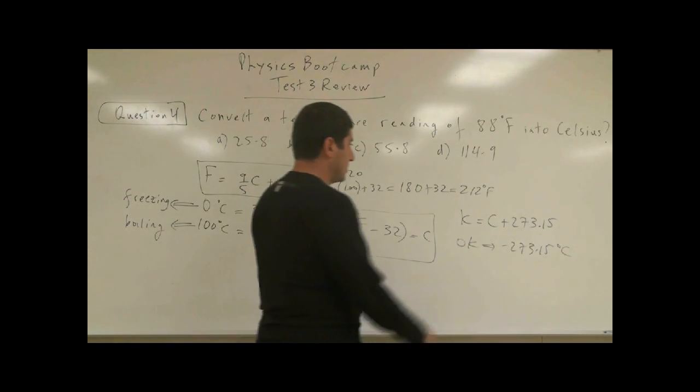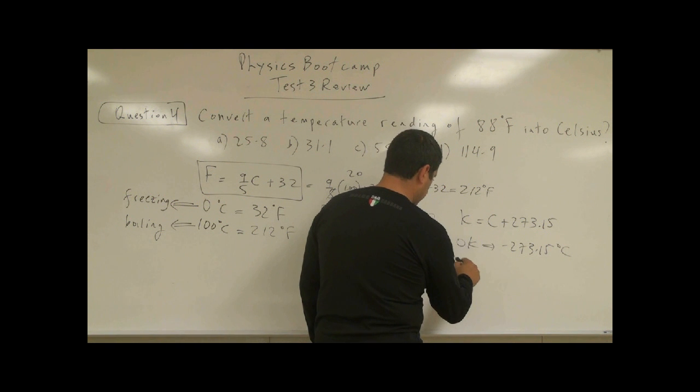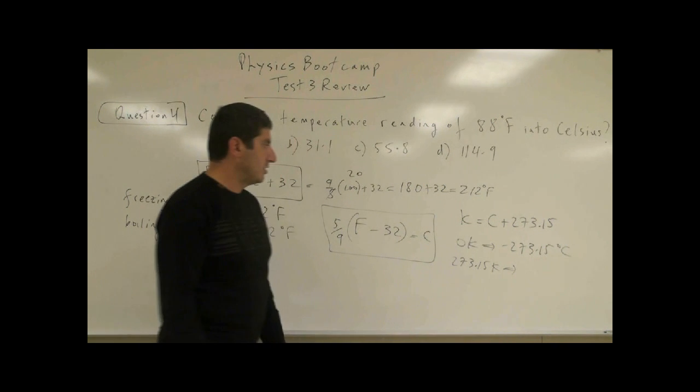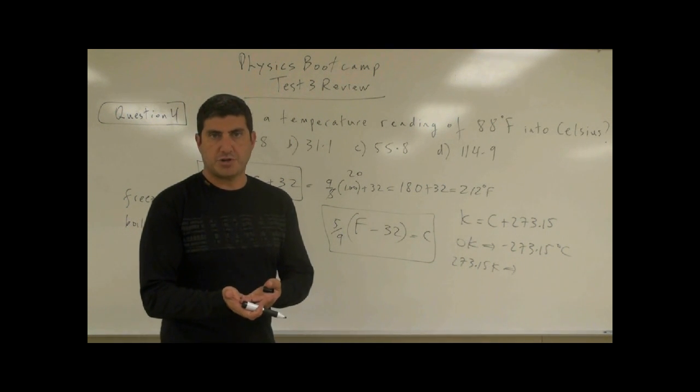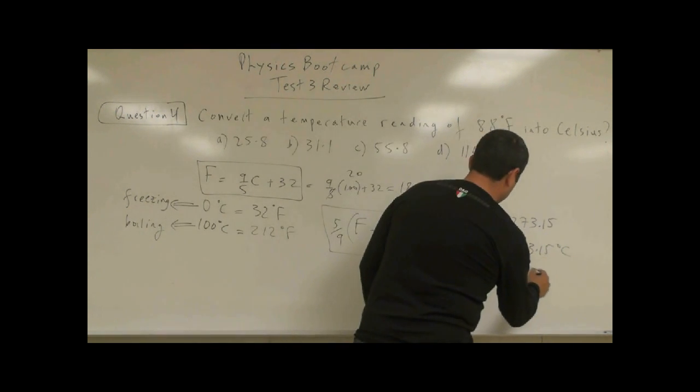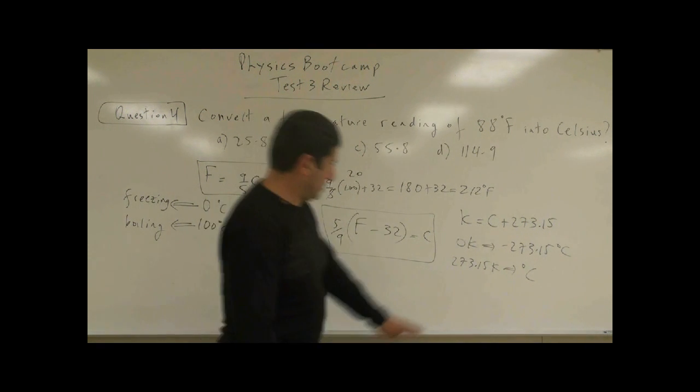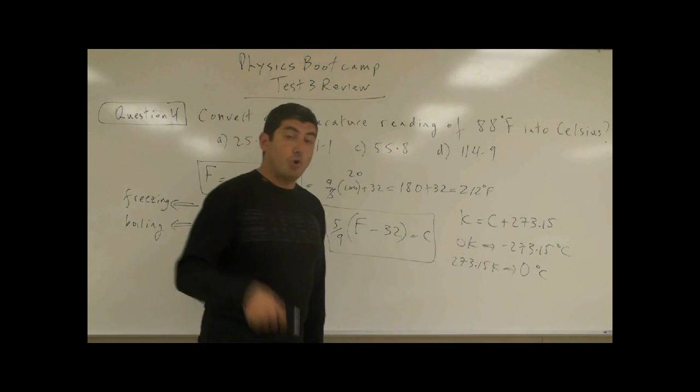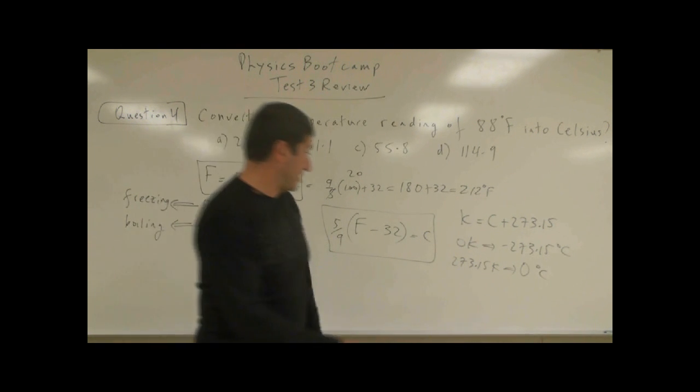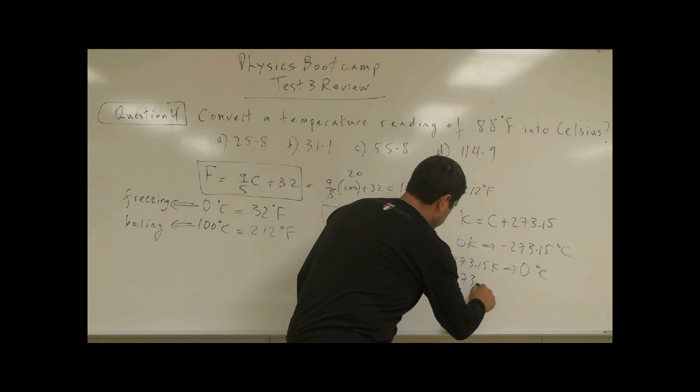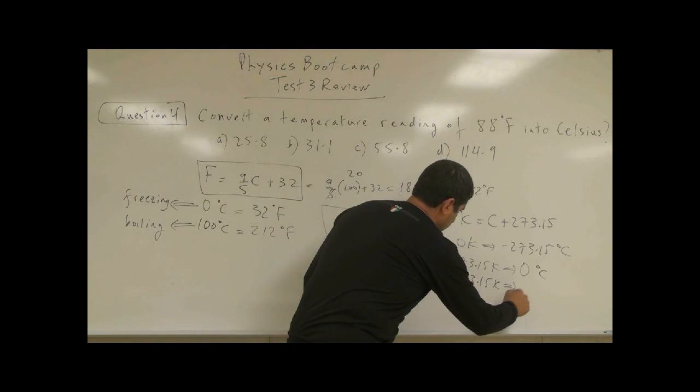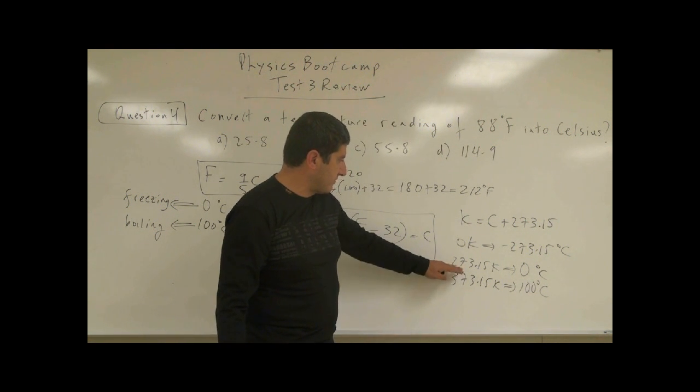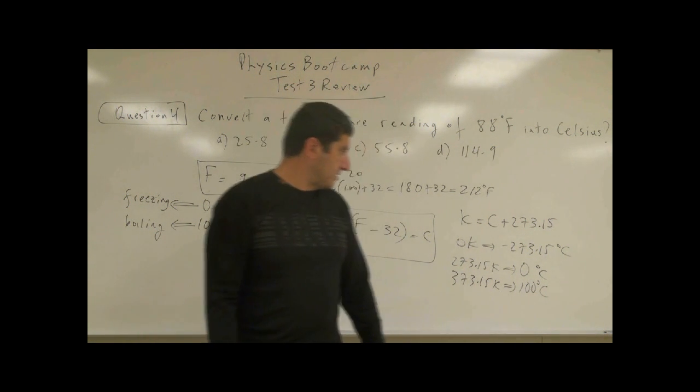And zero Kelvin, let's see, 273.15 Kelvin corresponds to zero degrees Celsius. So that's the freezing point of water. And boiling point of water would be 373. So that would be 100 degrees Celsius. So 373 Kelvin, 100 Celsius, 273 Kelvin, zero Celsius.